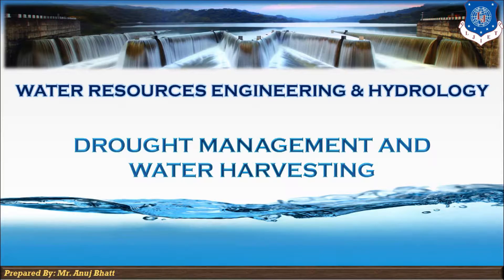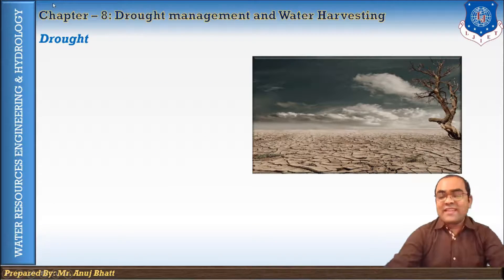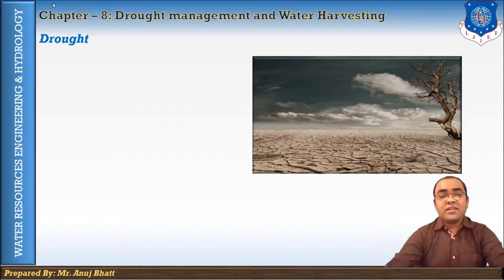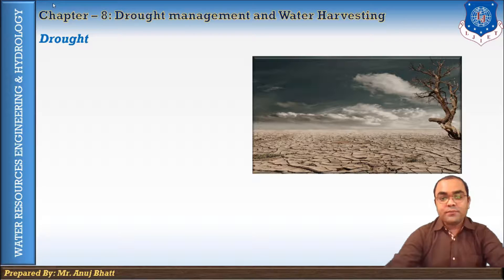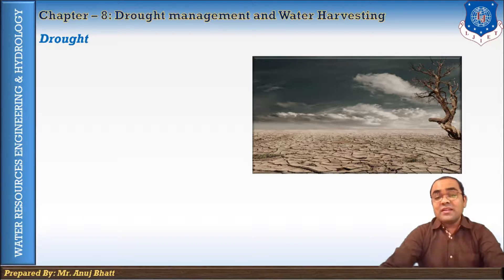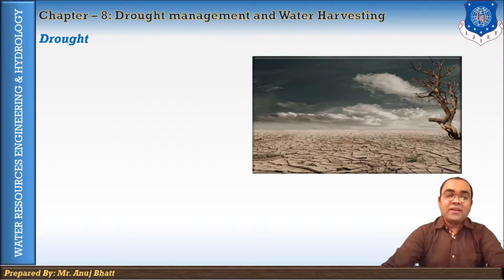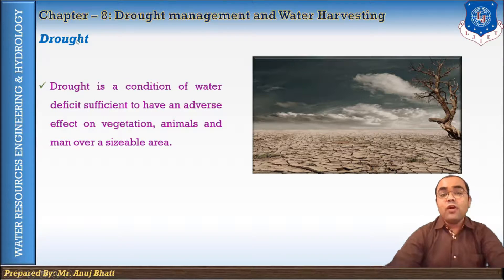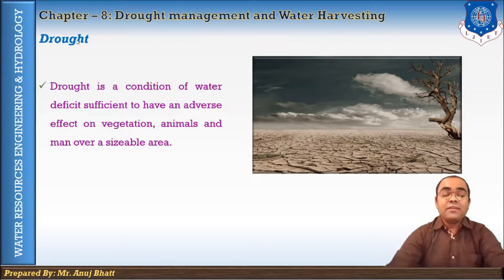A drought is an extended period of months or a year when a region notes a deficiency in its water supply, whether on the surface or in the underground water. Generally this occurs when a region receives consistently below average precipitation. Drought can be defined as a condition of water deficit sufficient to have an adverse effect on vegetation, animals, and people over a sizable area.